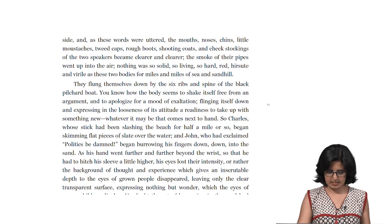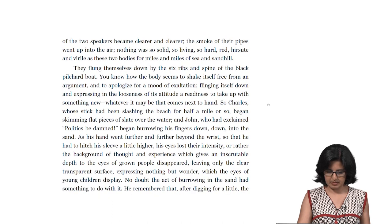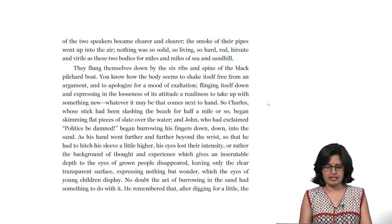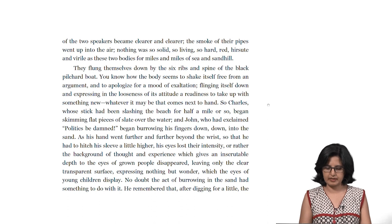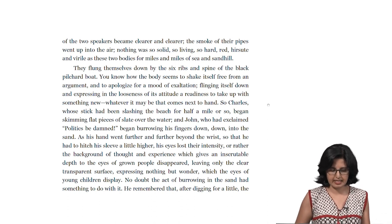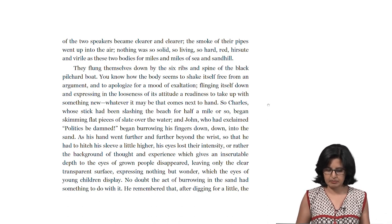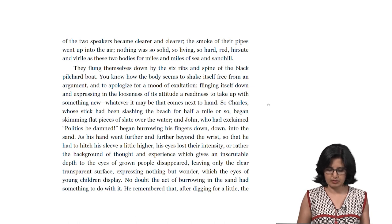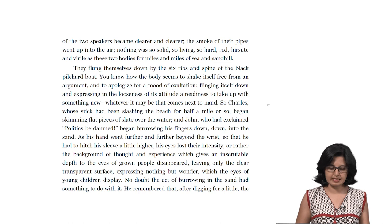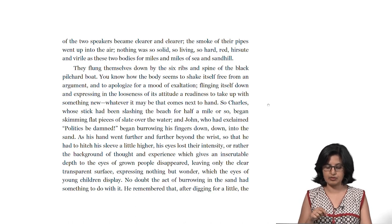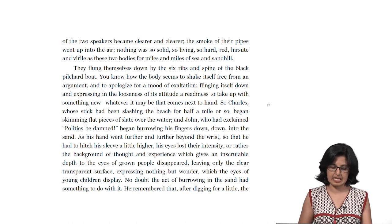If you are familiar with this short story — which is highly readable and very short — you will get to know that there are two major characters, John and Charles. John is currently a member of parliament and a candidate for an important party position. Charles is a very close confidant and one of his greatest friends. The story takes a turn when John, the one set to scale greater heights in his political career, suddenly discovers an obsessive passion — his passion for solid objects. Charles, whose stick had been slashing on the beach, began skimming flat pieces of slate over the water. And John, who had exclaimed 'politics be damned,' began burrowing his fingers down into the sand.